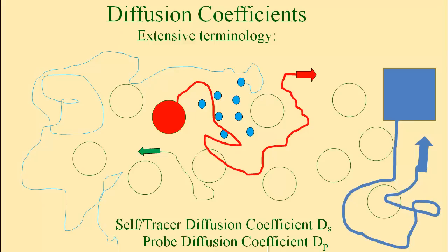We could also do a somewhat different experiment in which we drop into the system a blue square — a polymer molecule that is a bit different, for example entirely different in size, than the polymer molecules that constitute the matrix. In that case we're studying the tracer diffusion coefficient, sometimes abbreviated D_T. Finally, we could take the blue square and make it something very different — a mesoscopic probe particle, say a polystyrene latex sphere — and measure the motion of the sphere through a polymer solution matrix. That's the study of probe diffusion, characterized by the probe diffusion coefficient D_P.